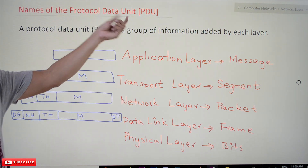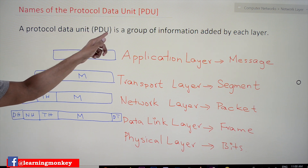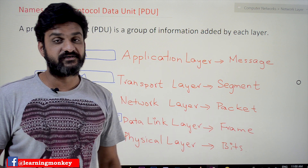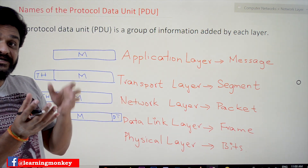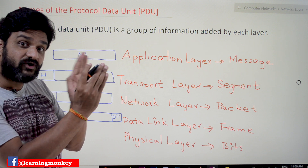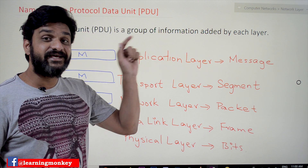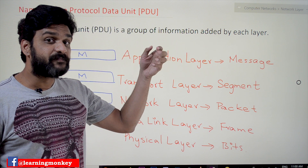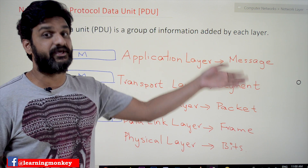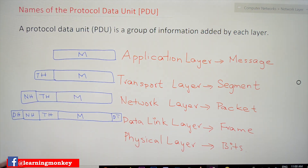So what is meant by Protocol Data Unit? A Protocol Data Unit (PDU) is a group of information added by each layer. At each and every layer, the content that is being added — that unit of data — is what we call a Protocol Data Unit. At each layer, the PDU will have its own name.